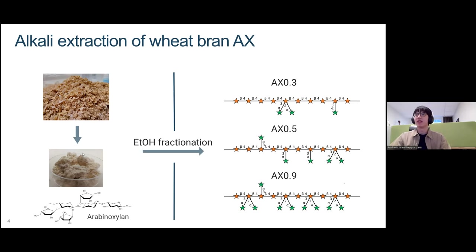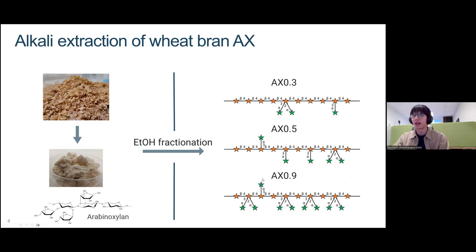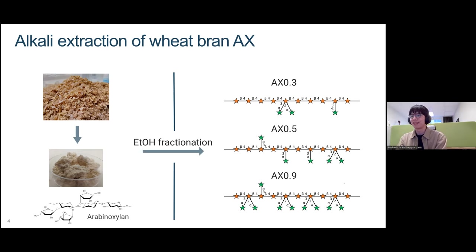To the right you have a representative schematic of what these fractions could be. The patterns of linkages are very complex, as Francisco was saying, and we don't fully know the distribution yet. On average, we know there are three arabinoses to ten xyloses in the first batch, and in the final — most water-soluble — fraction, there is 0.9 arabinoses per xylose residue. The substitution patterns can be mono-substituted, di-substituted, and there are cases where arabinoses substitute on another arabinose. These are very complex polymers.